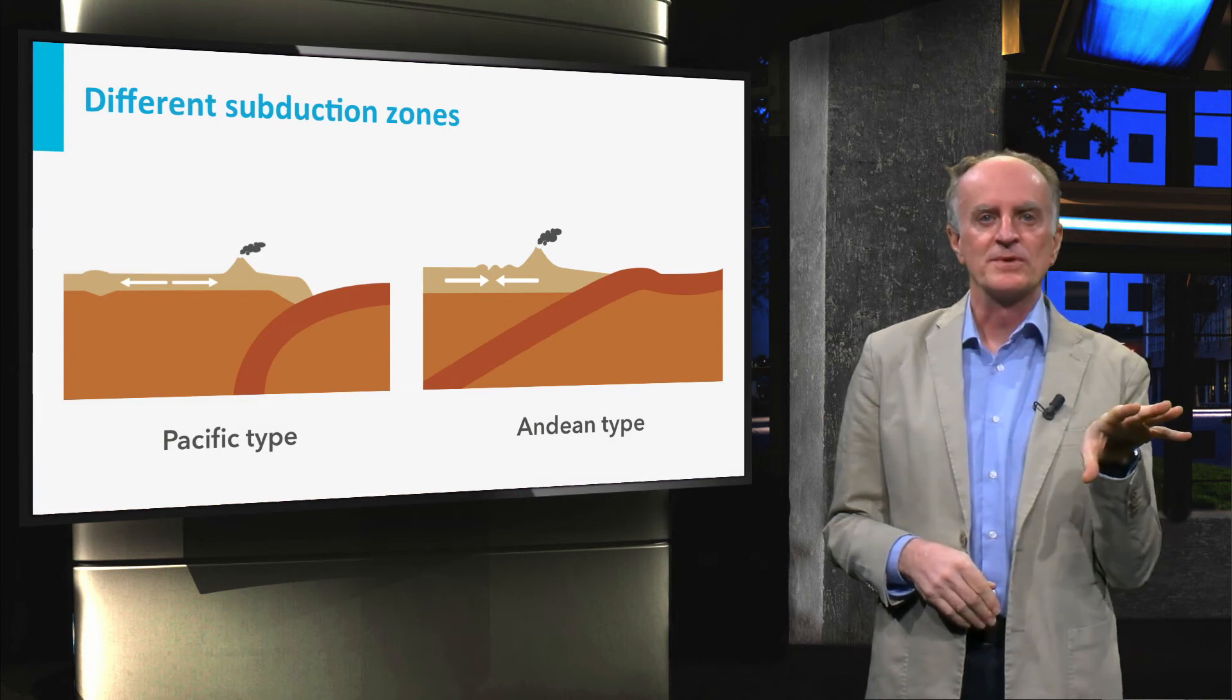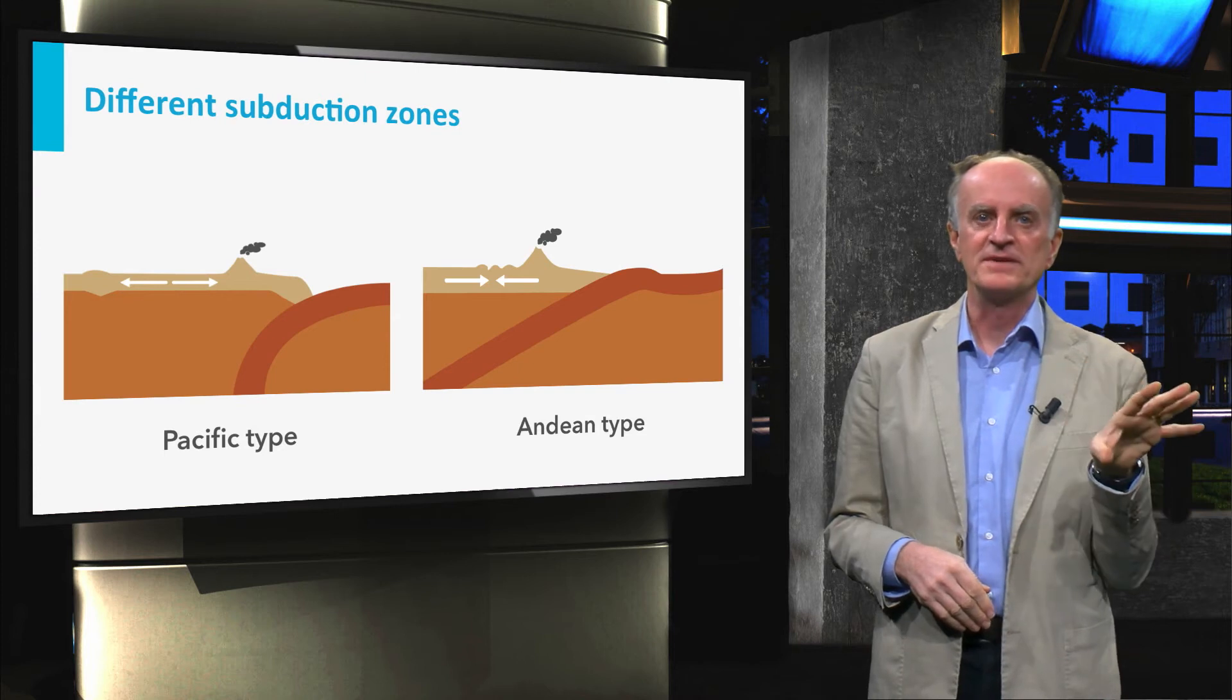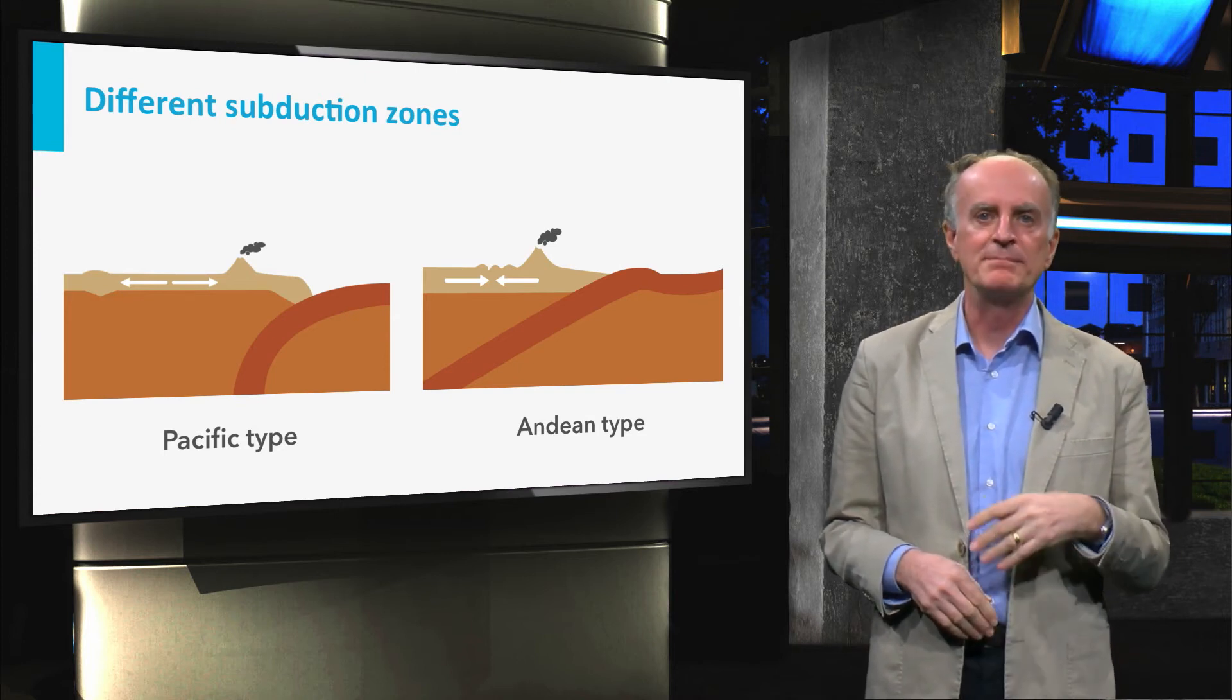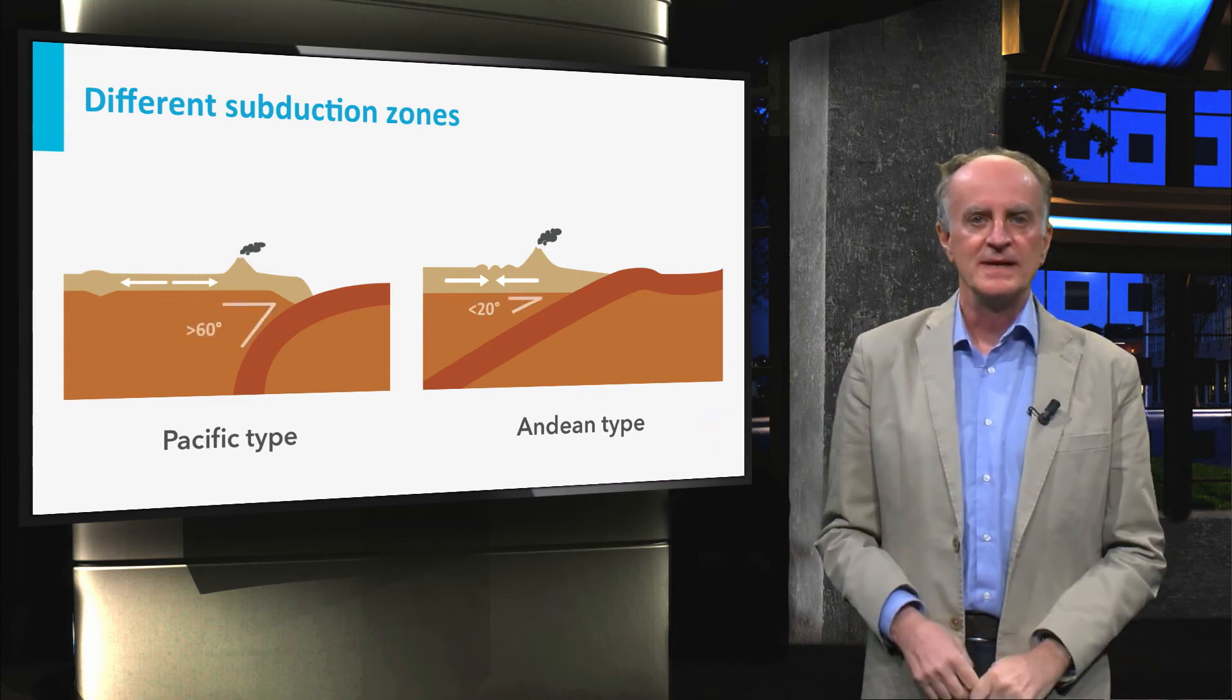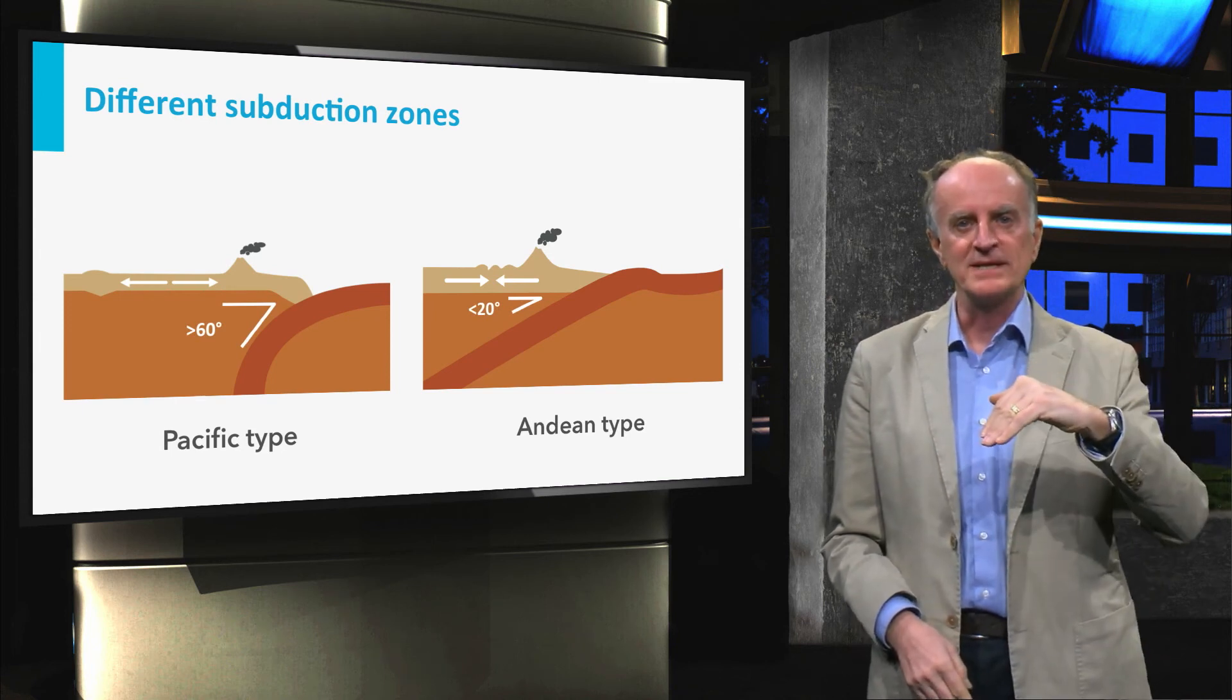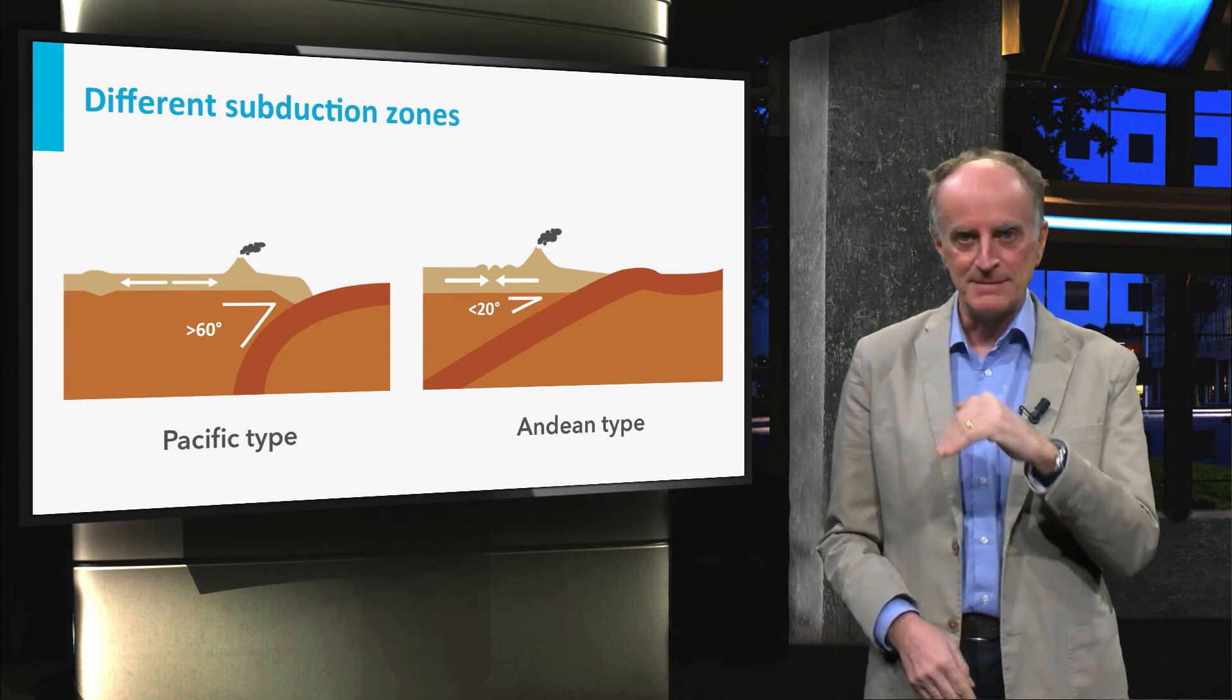Subduction zones in the world all share the three features mentioned above. Some other features are however different, and have led to the definition of two end-member, Indian-type and Pacific-type subduction zones. The main difference between the two is the position of the subducting plate, which is gently dipping in Indian-type subduction and steep in Pacific-type.